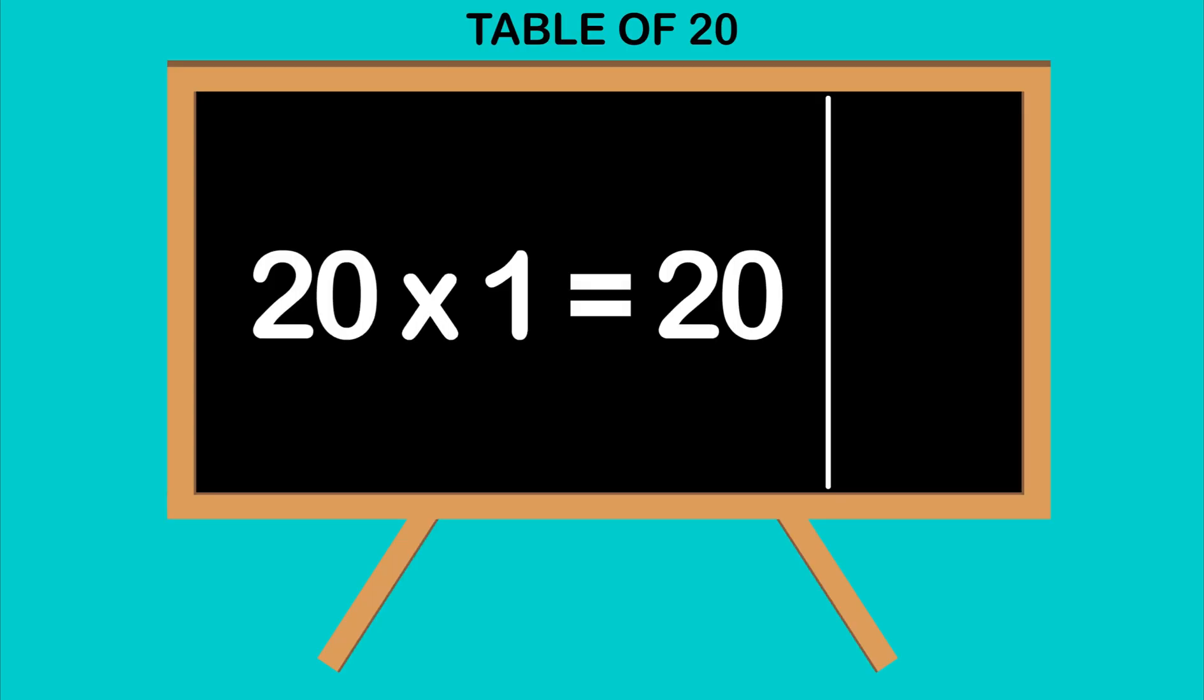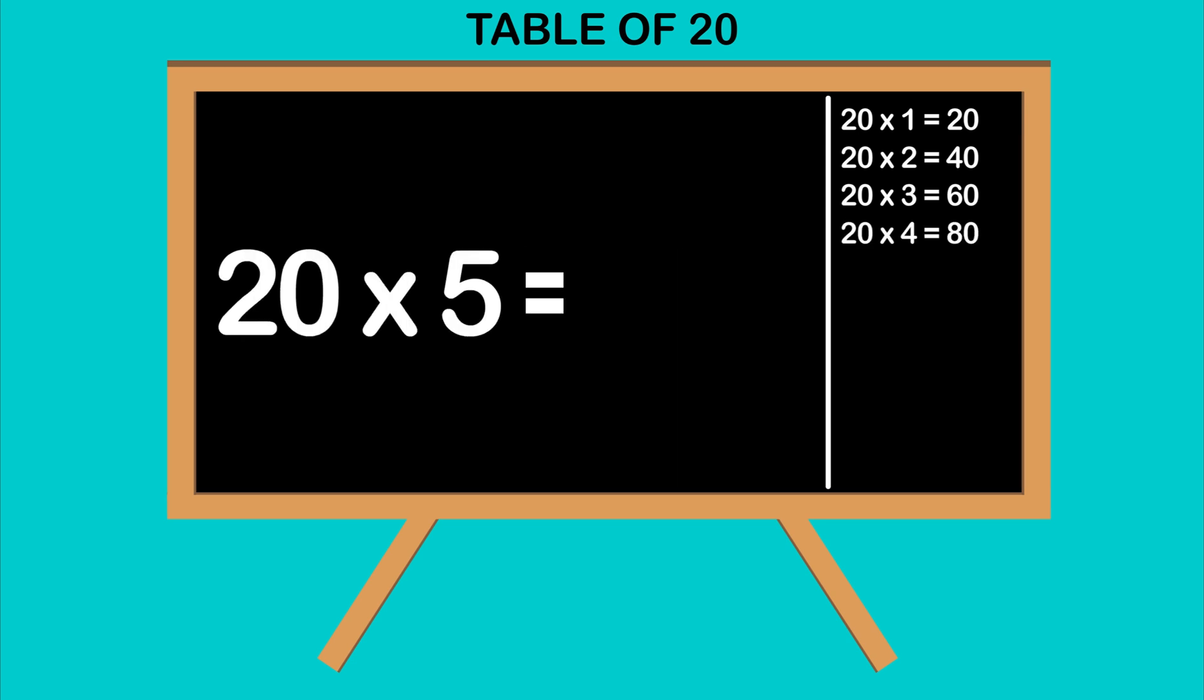Table of 20: 20 ones are 20, 20 twos are 40, 20 threes are 60, 20 fours are 80, 20 fives are 100.